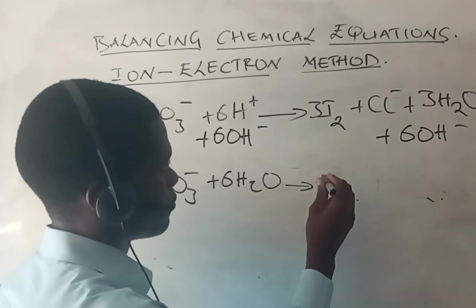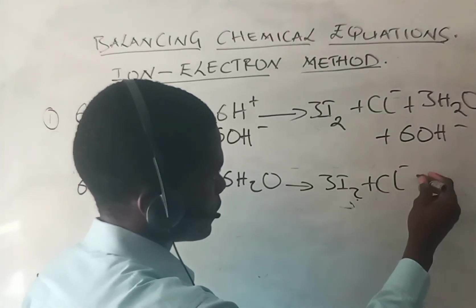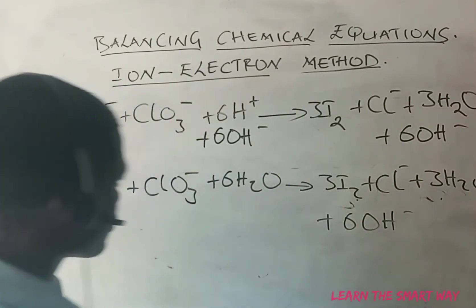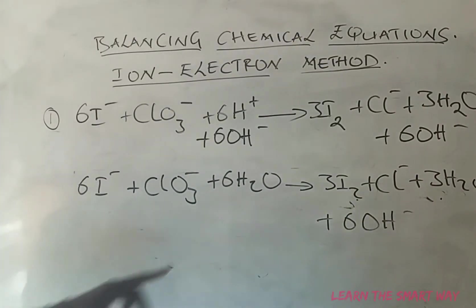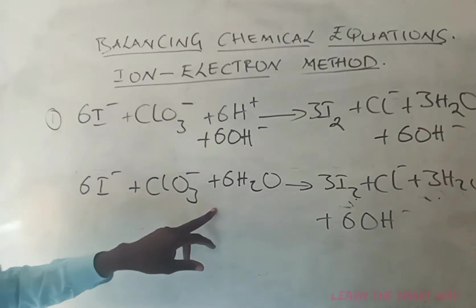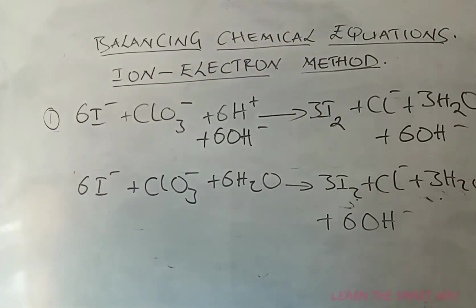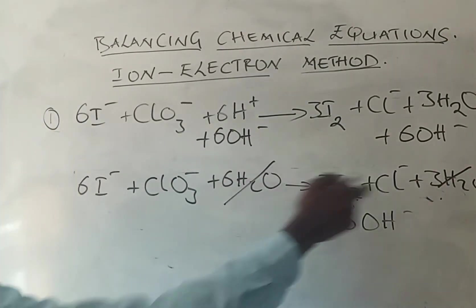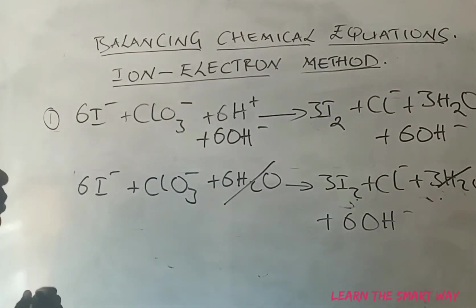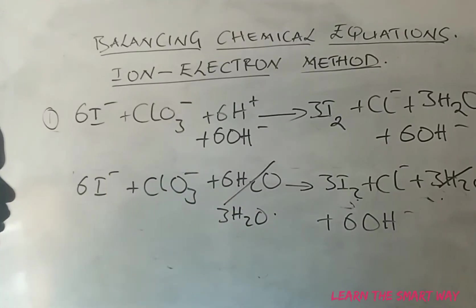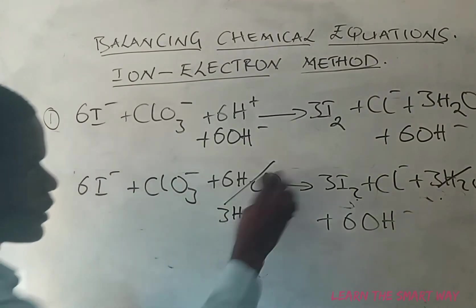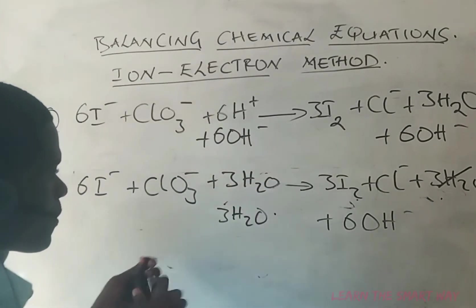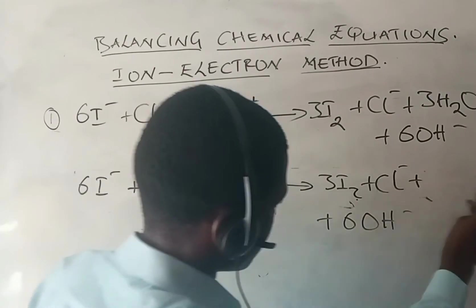The right-hand side now has three I₂ plus Cl⁻ plus three water molecules plus six hydroxide ions. Water is common on both sides — three on the right and six on the left — so we cancel three, leaving three water molecules on the left. Moving the remaining three water molecules and the six hydroxide ions gives us the final balanced equation in basic media.